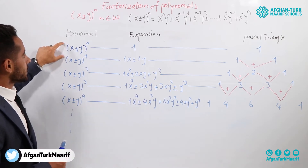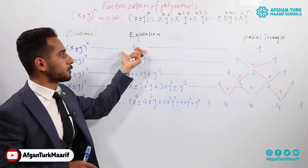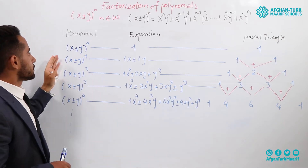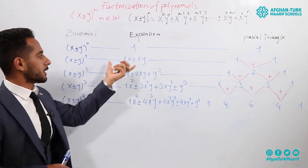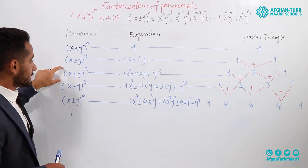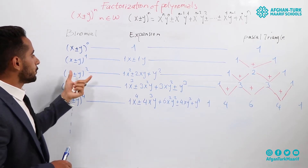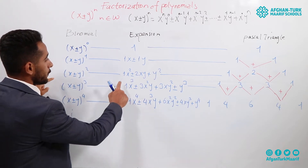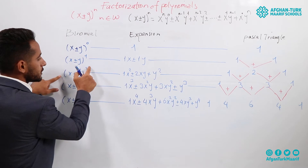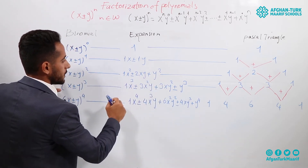For example, x plus or minus y to the power of 0 — we know that every number to the power of 0 is equal to 1. Or x plus or minus y to the power of 1 is equal to x plus or minus y. Now pay attention to x plus or minus y to the power of 2. The first term is x to the power of 2, because the power of the whole identity is 2. If it is positive, all the terms should be positive.